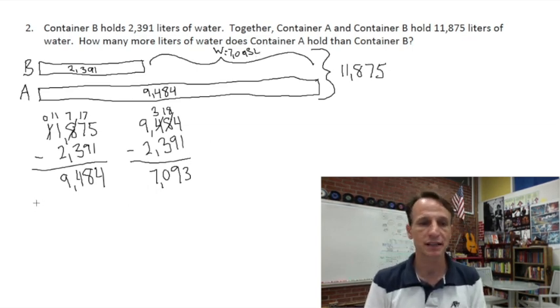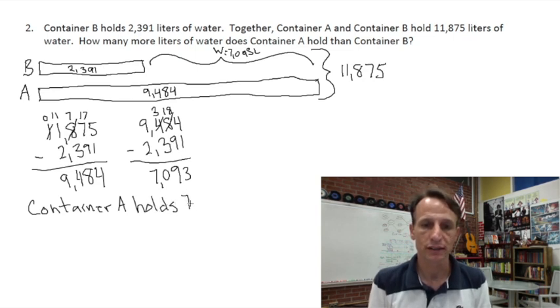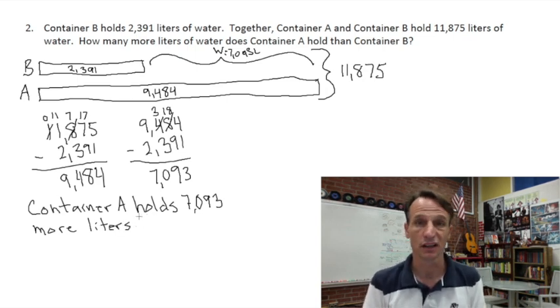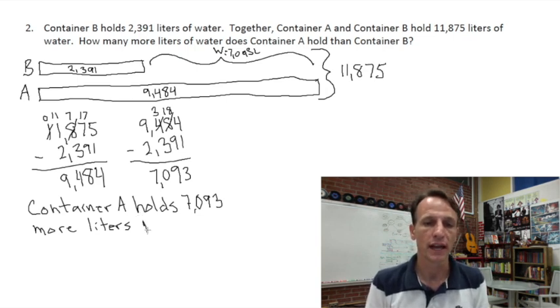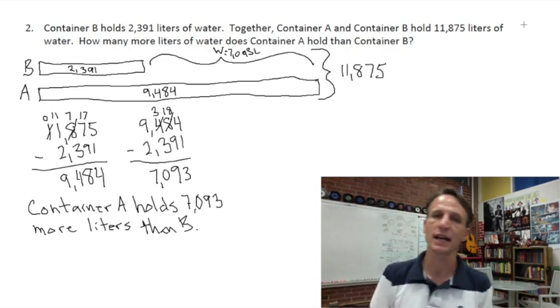So now this is W. W equals 7,093 liters. Now I just simply need a statement. Container A holds 7,093 more liters than B. Great, there's two. Let's rock on with number 3, shall we? Yes, indeed.